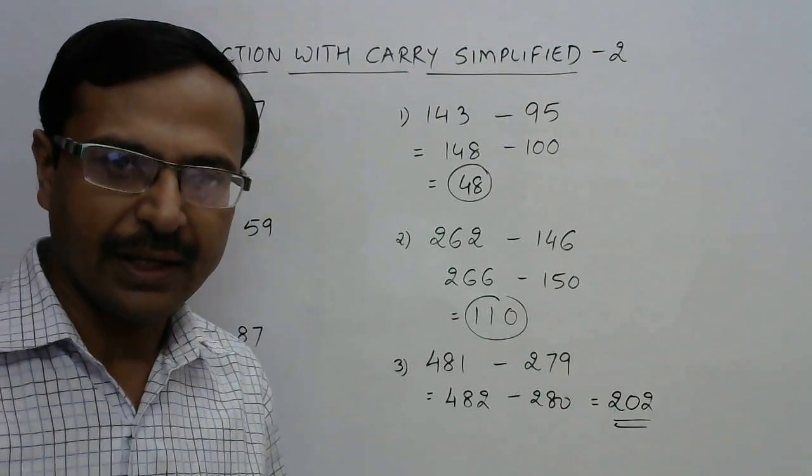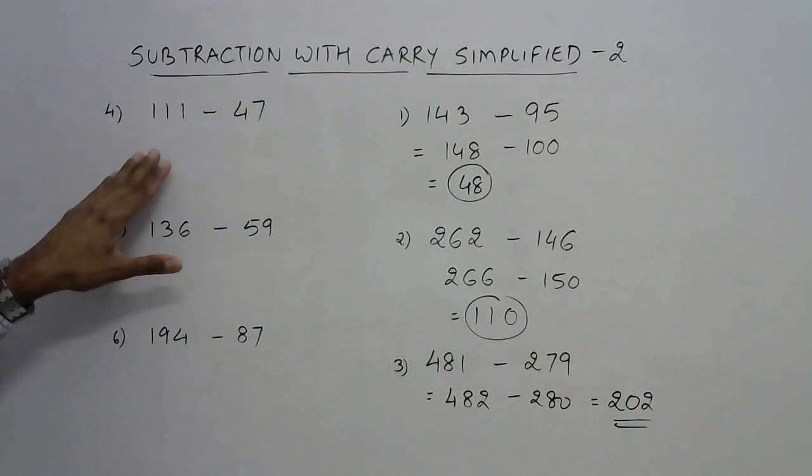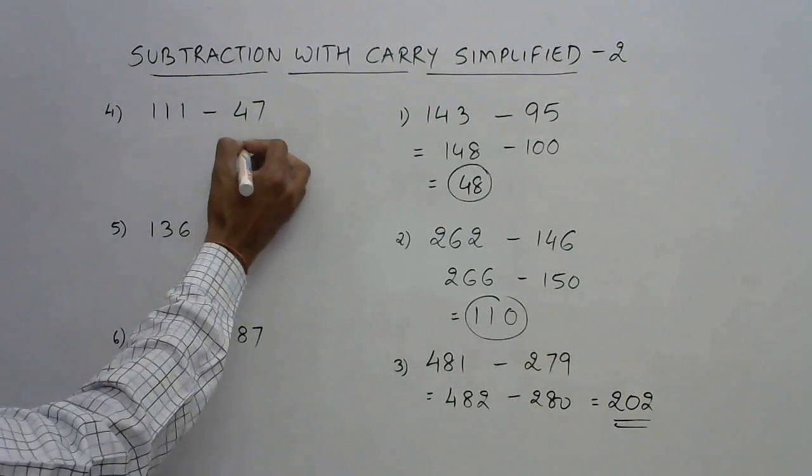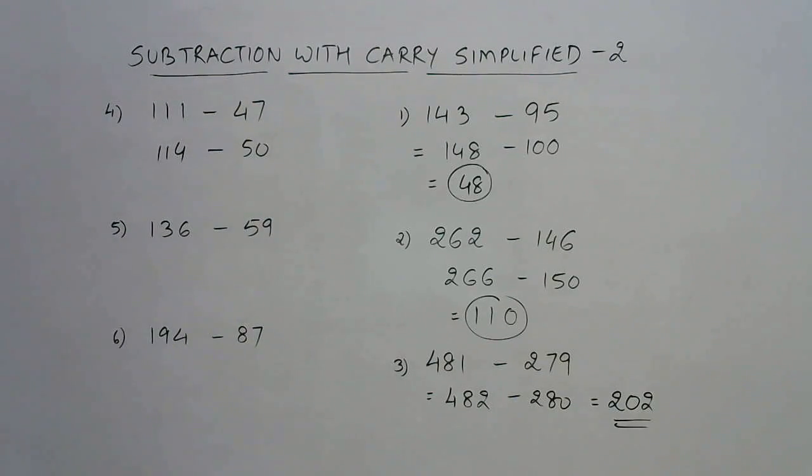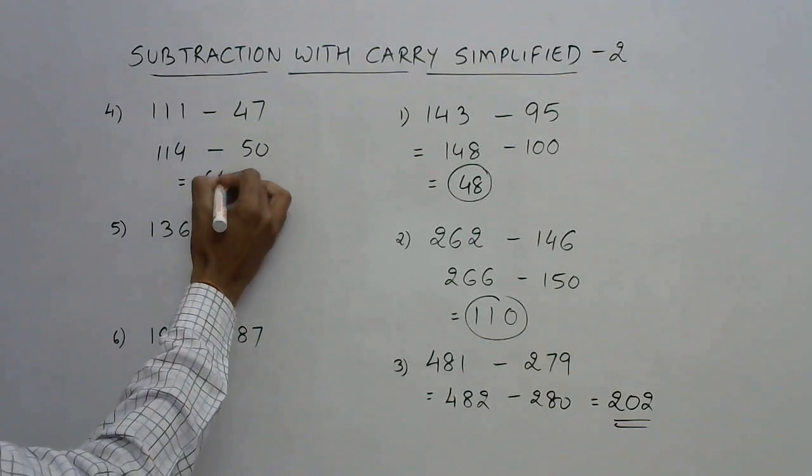Now this is how you need to carry out the subtraction of numbers which involve a carry. So let's see three more examples. Say 111 and 47. This is very close to 50, so I will increase this by 3, so this is also to be increased by 3. Now see, 11 minus 5 is 6, and we have a 4 here, so 64 is the answer.